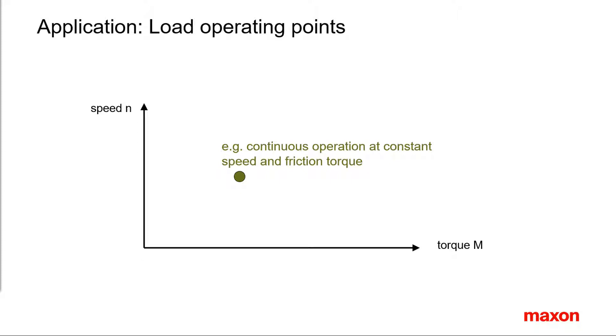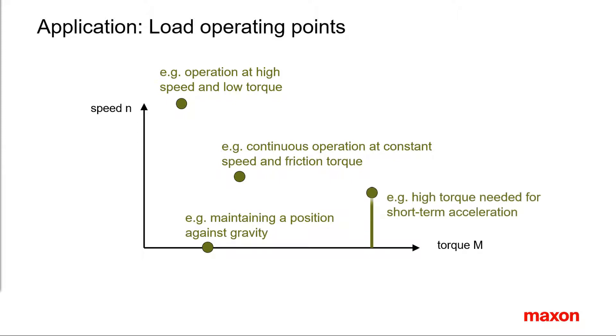For example, a constant operation at the given torque and speed. There might be an operation point at higher speed but at lower torque, or maintaining a position against some external force at zero speed, or accelerating a mass inertia, which usually needs the highest torque.